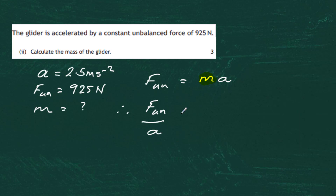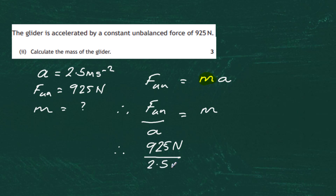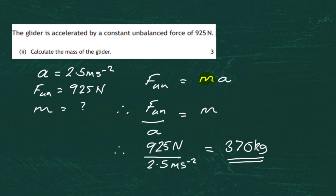Plugging in the numbers: m = 925 newtons divided by 2.5 meters per second squared, which gives 370 kilograms. That's quite straightforward and gains us three marks. Final answer: 370 kg.